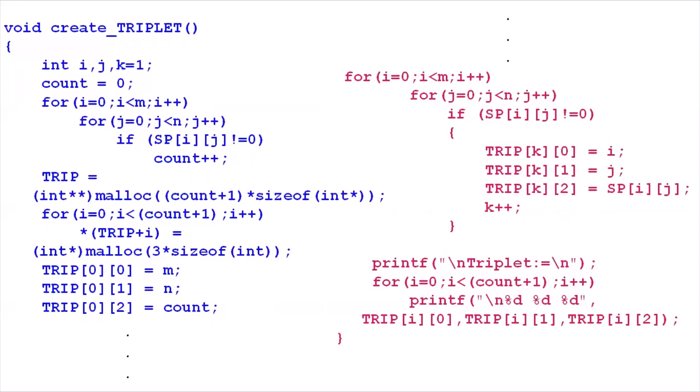In createTriplet, we initialize variables, then run loops from i=0 to m and j=0 to n to count non-zero elements in the sparse matrix. Once found, we create a two-dimensional dynamic array of size (count+1) × 3. We then store m, n, and count in the first row of the trip matrix. Next, we scan the array again and whenever we encounter a non-zero element, store the row number, column number, and value in the kth row of the trip matrix, incrementing k each iteration. Finally, we display the triplet matrix.